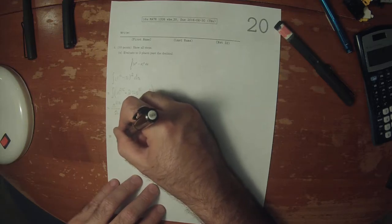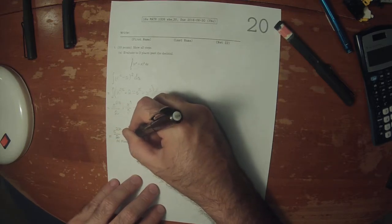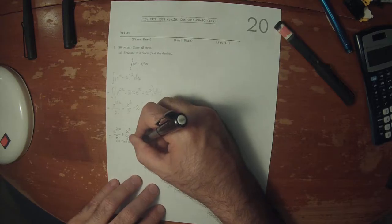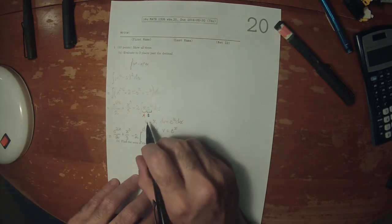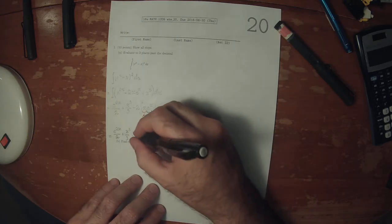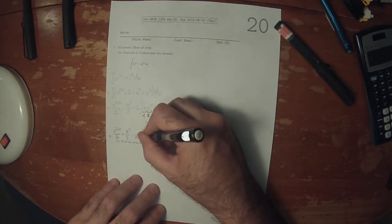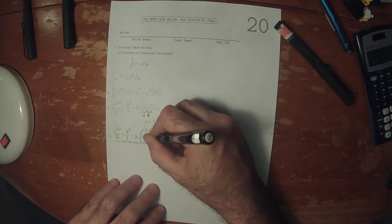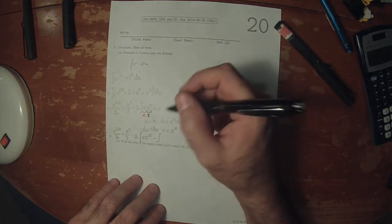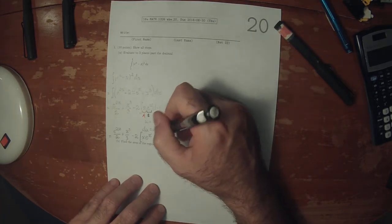Plus x to 3 over 3 minus 2, and now in parentheses u times v: x e to x minus the antiderivative of v du.